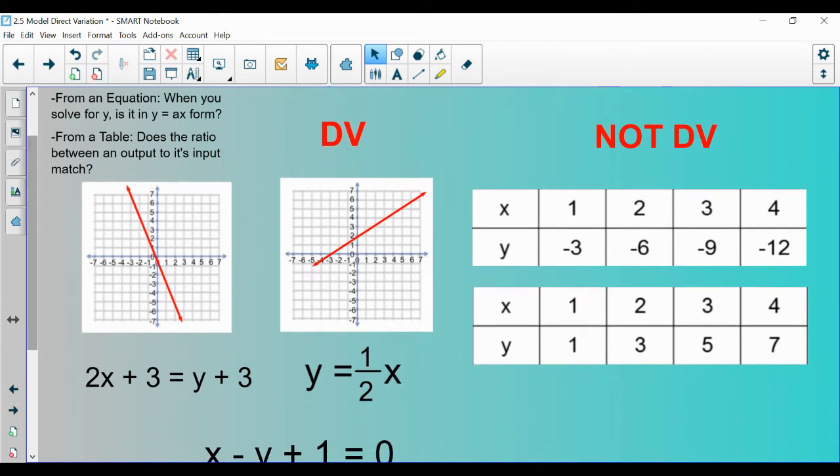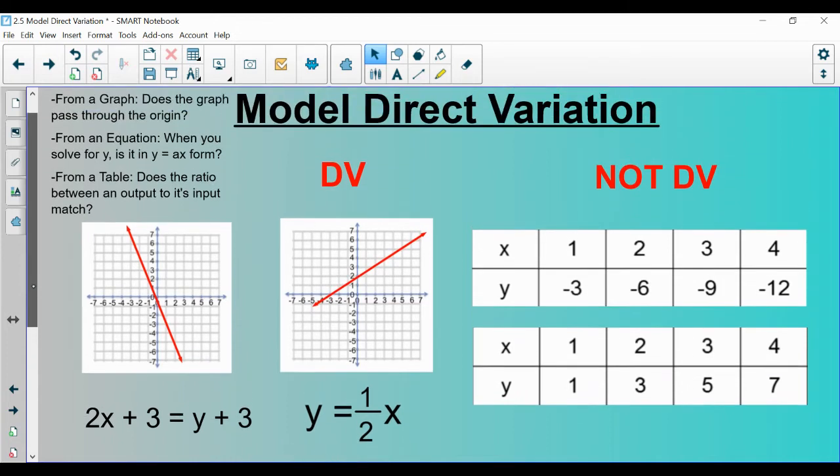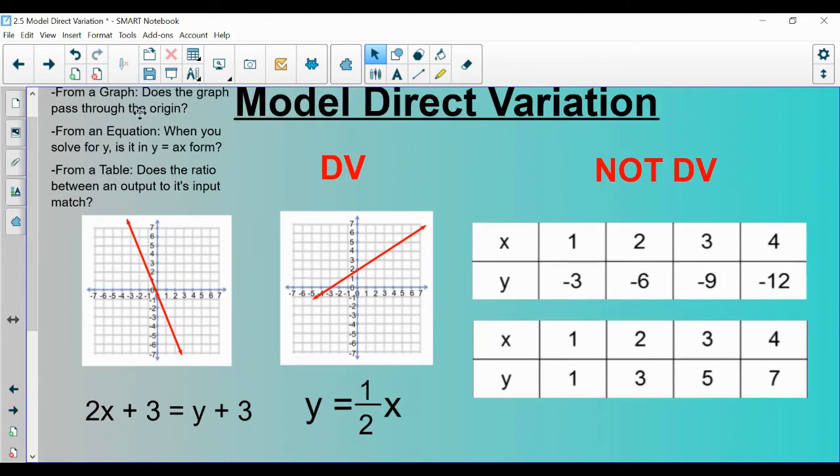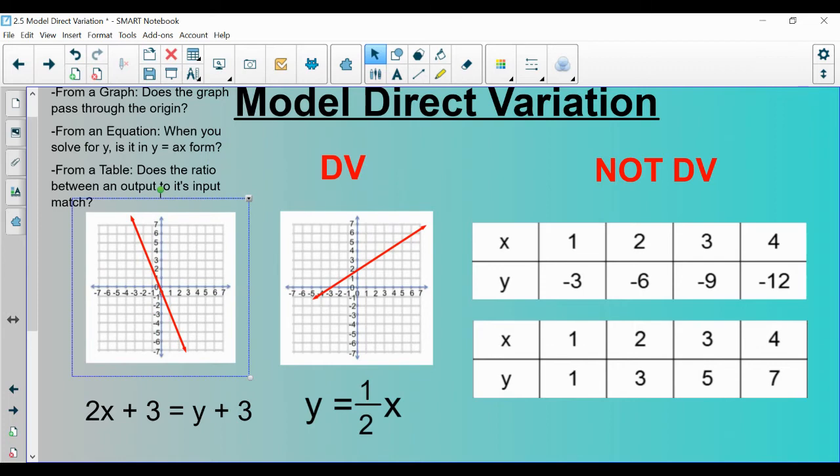Here is a fundamental game. Let's try to figure out if these things are direct variation or not. First up, let's look at these graphs. One of them is direct variation and one of them is not. If you guys remember, we have it up here from a graph. Does the graph pass through the origin? If it's yes, it's direct variation. That means this guy here is our direct variation example.